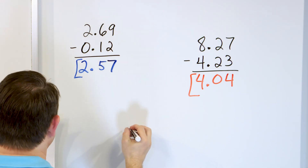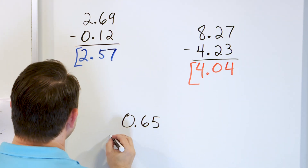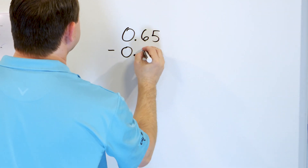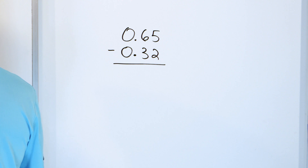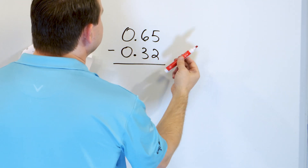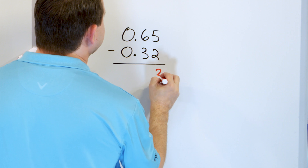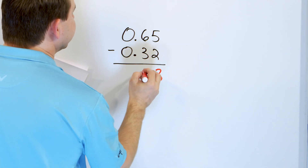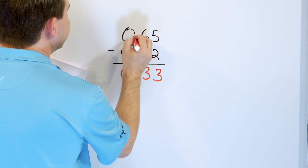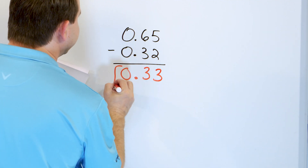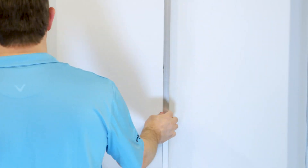All right, almost done with this lesson. 0.65 subtract 0.32. Start in the far right: 5 minus 2 — go down: 4, 3. We land on 3. 6 minus 3 is 3. 0 minus 0 is 0. And the decimal just drops right down here for 0.33. And that's the final answer.